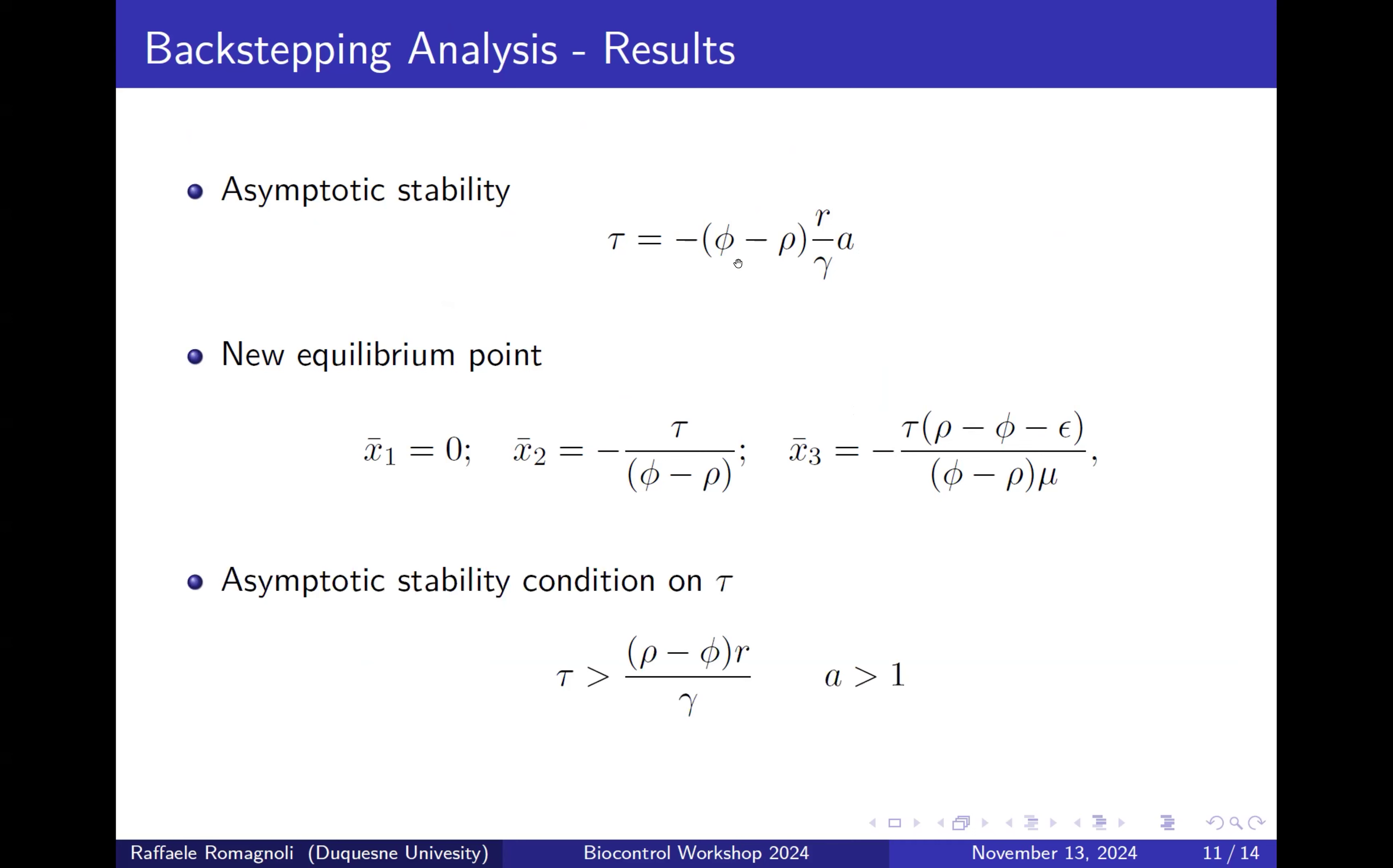In general, finding this kind of cancellation can be very difficult. But doing other analysis, we can find that this tau can be just greater than this quantity in order that we don't know exactly the value of the parameters.